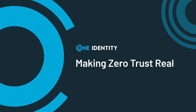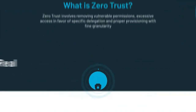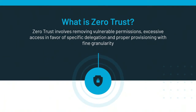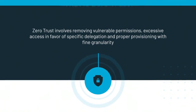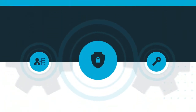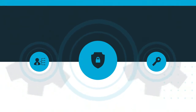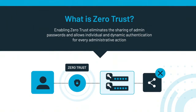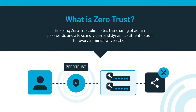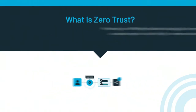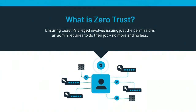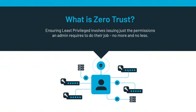Making Zero Trust Real with One Identity. Zero Trust simply means that your default stance is of no trust, and you achieve that by removing all unnecessary or excessive access rights and replacing those with just-in-time delegation and accurate provisioning. For privileged users, this means eliminating the sharing of passwords and dynamic approval workflows for administrative actions. With the least privileged stance, every admin user gets just enough permission to do their job — no more, no less.